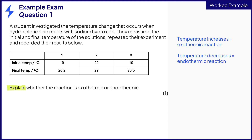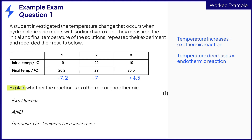We have said that the temperature of the surroundings increases in an exothermic reaction and decreases in an endothermic reaction. Looking at these results, we can see that in each experiment the temperature increases. The reaction is therefore exothermic because the temperature increases.